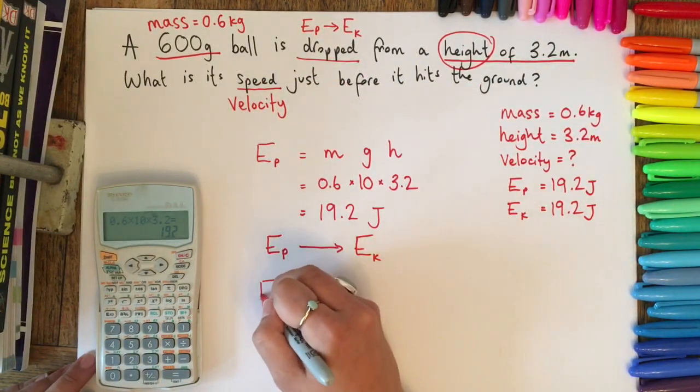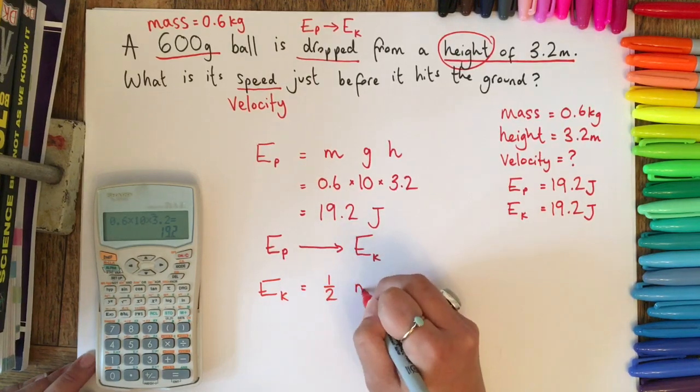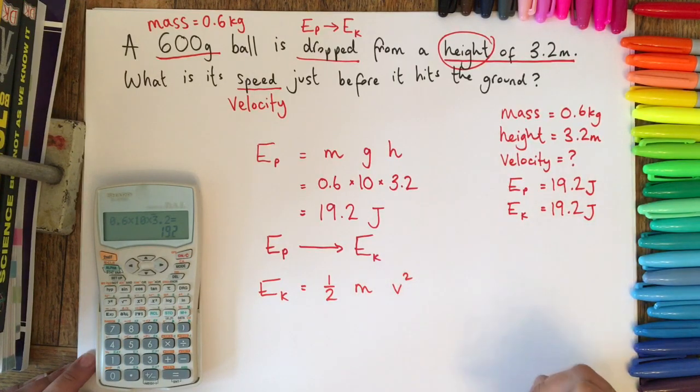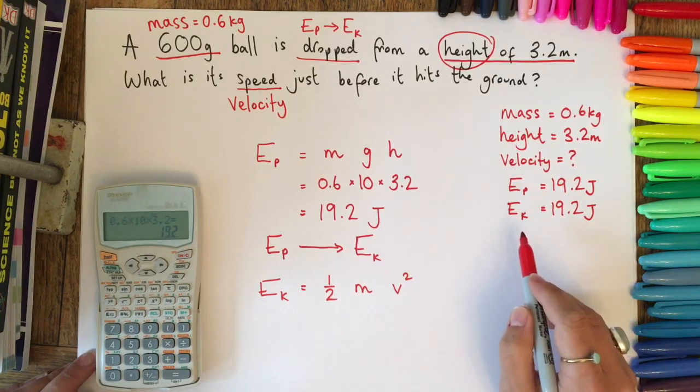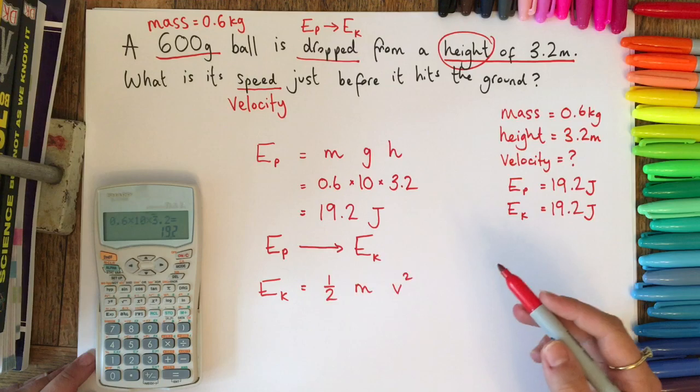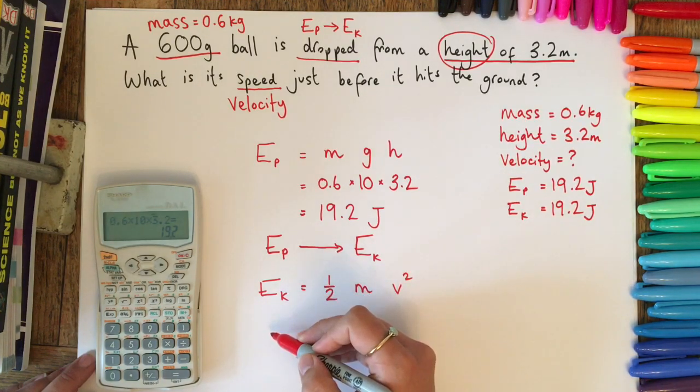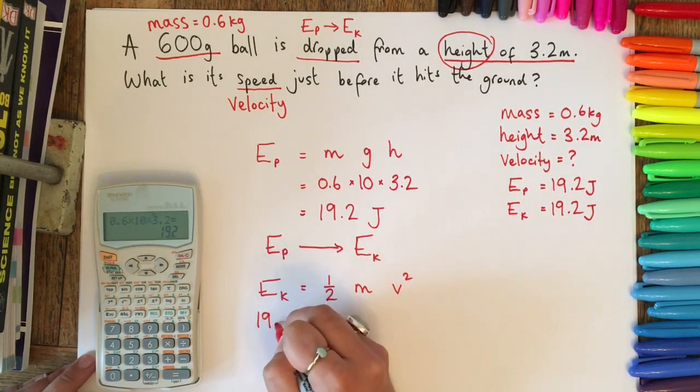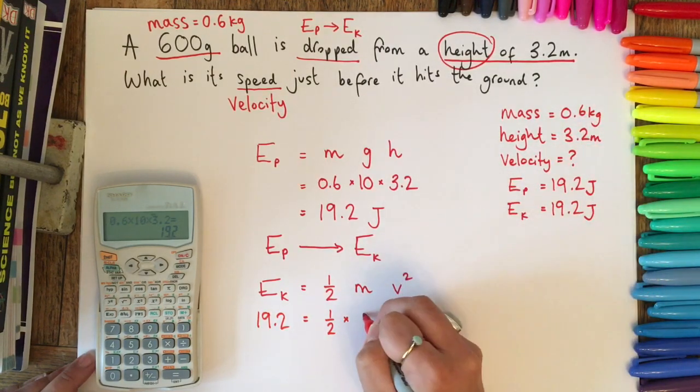Then we can think about, well actually I know that the equation for kinetic energy does contain velocity. So we can write that out: our kinetic energy is a half times mass times velocity squared. This is how we can calculate our velocity. You could rearrange this algebraically to start off with, or you can substitute in the values and then solve for v. We're going to do that because it tends to be a little bit easier. If we put down our values that we know directly below the equation, our kinetic energy is 19.2, and then we've got a half times our mass of 0.6 times v squared.